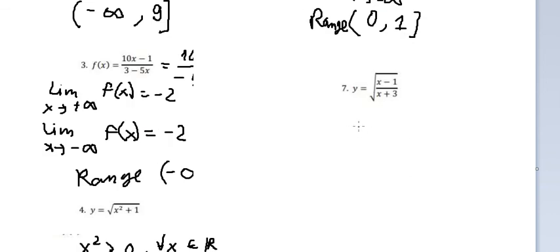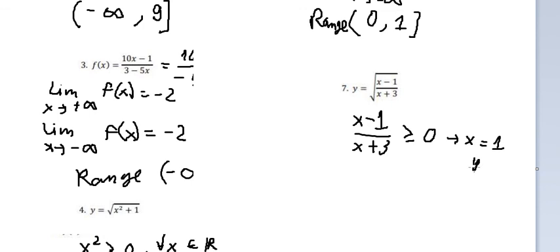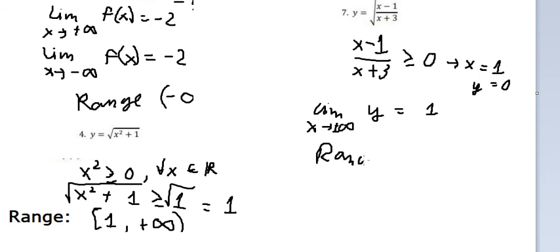For the last one, we need to know that (s minus 1) over (s plus 3) must be greater than or equal to zero. The smallest value occurs when s equals one, giving y equals zero. When s approaches positive infinity, the function approaches one. So the range of this situation is from zero to number one, and from number one to positive infinity.